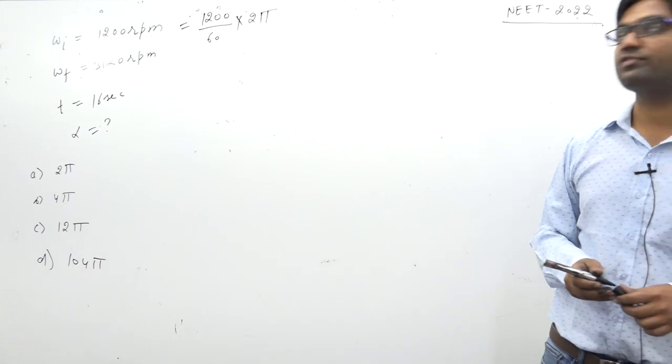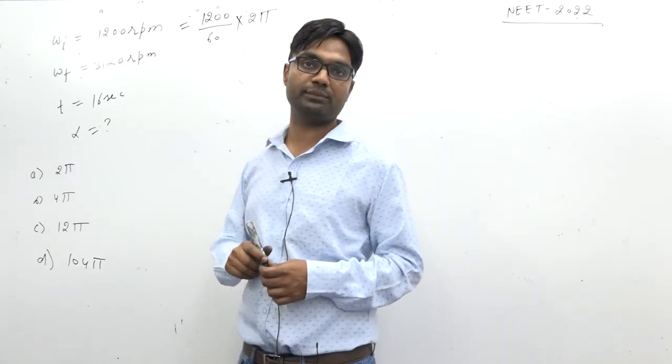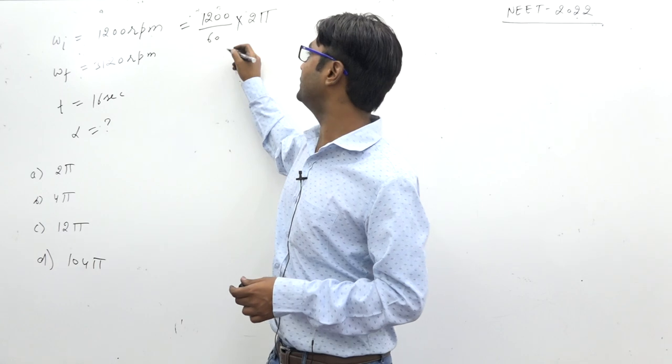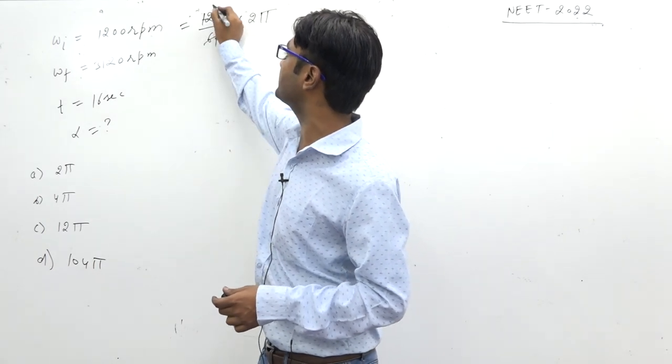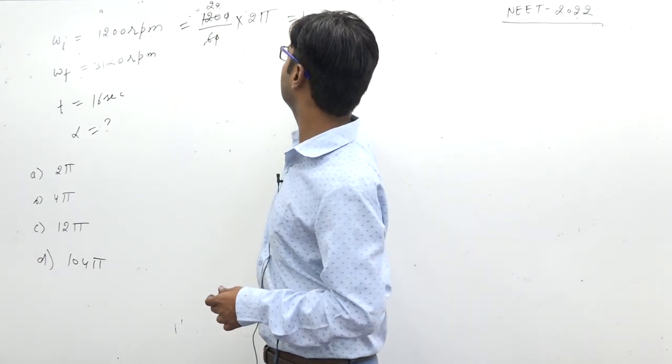So here, number of rotations. So there are so many rounds, so what is the angular displacement? It will get to know the angular displacement. So this is what omega initial is. Omega initial, you have to get 40π. This is omega initial.